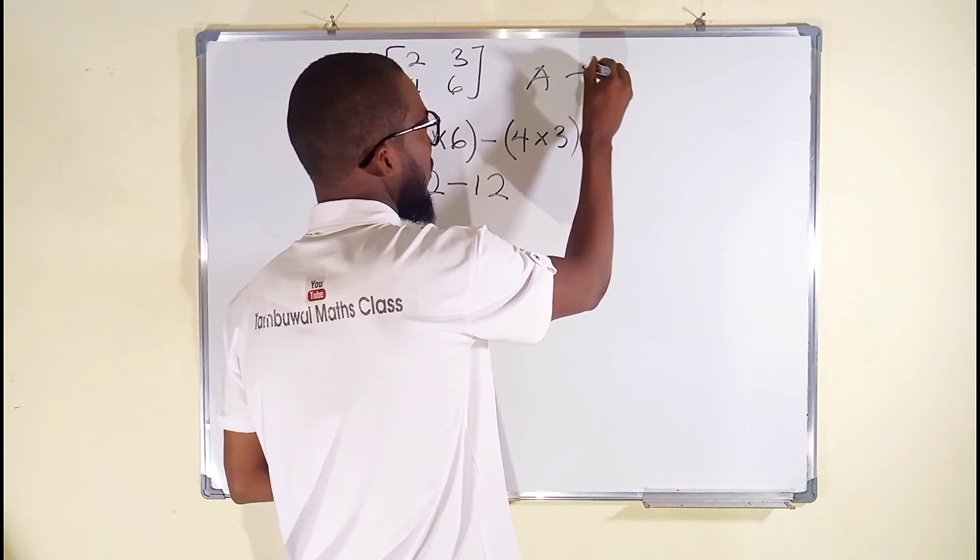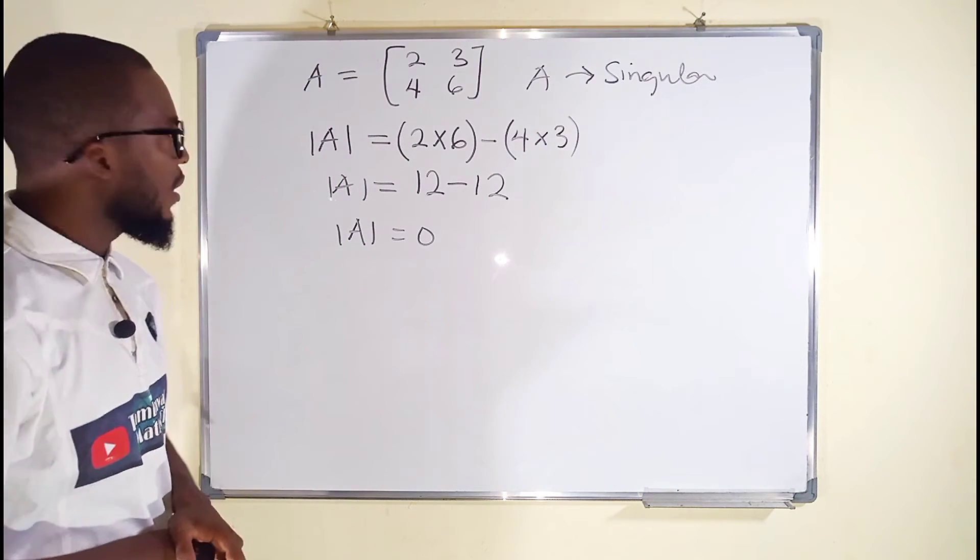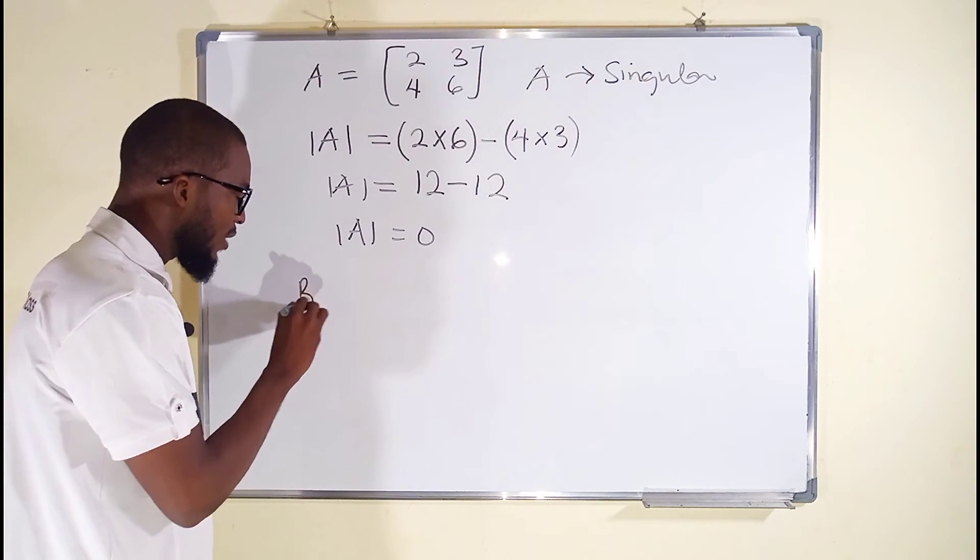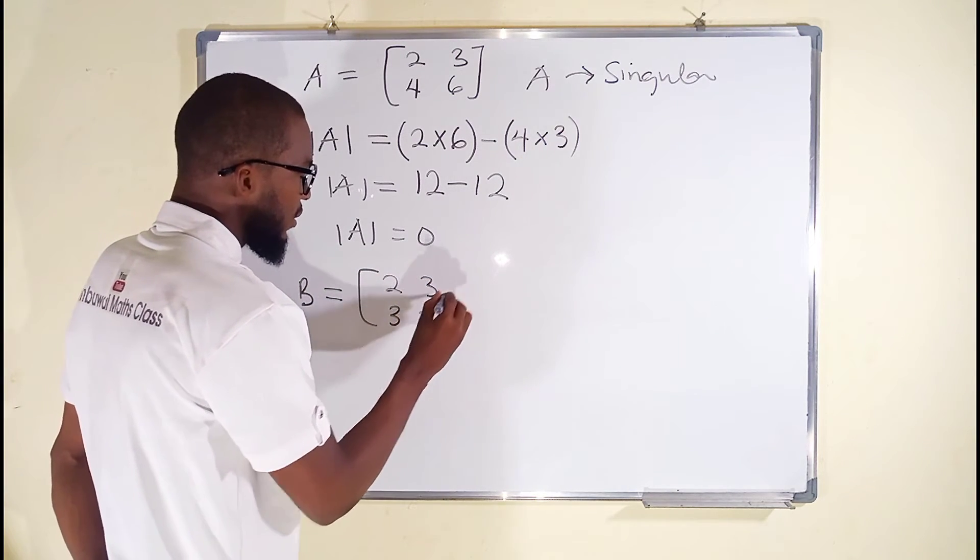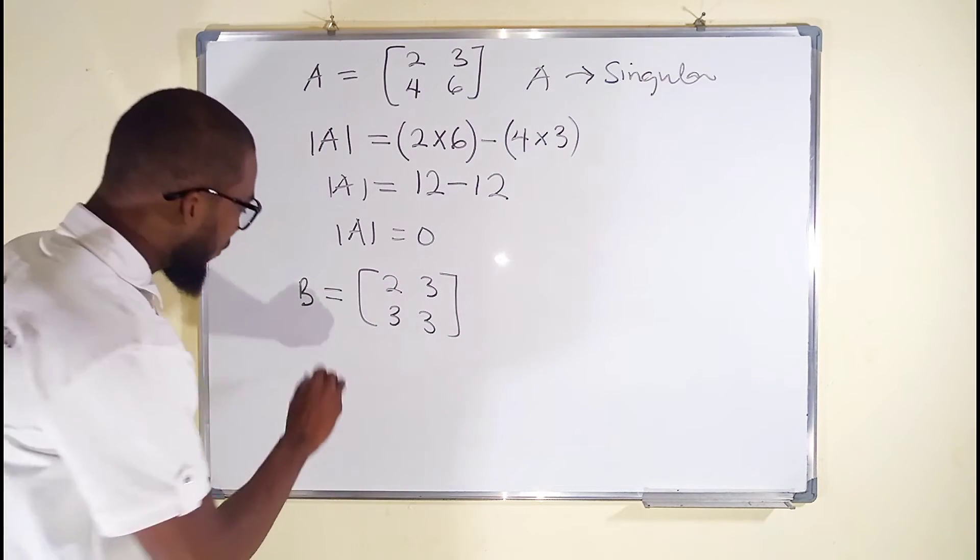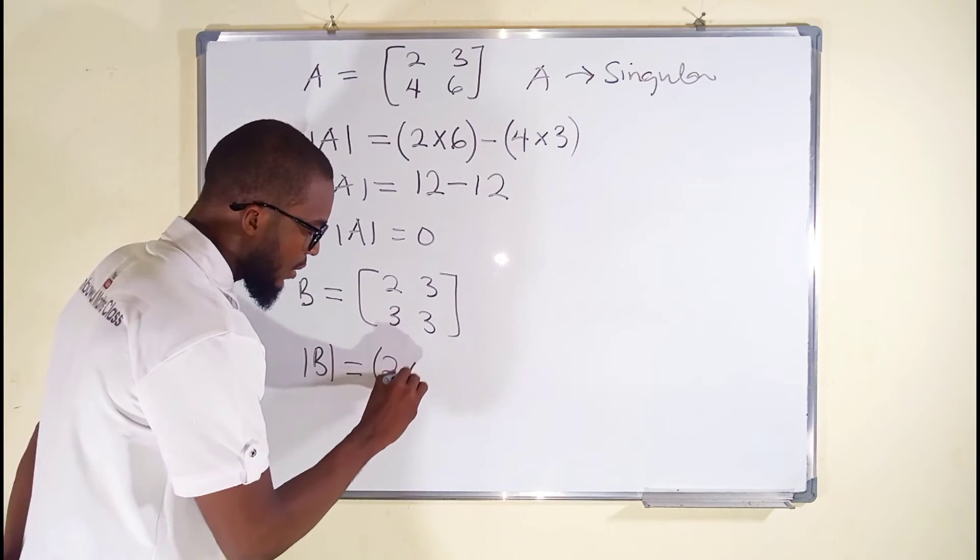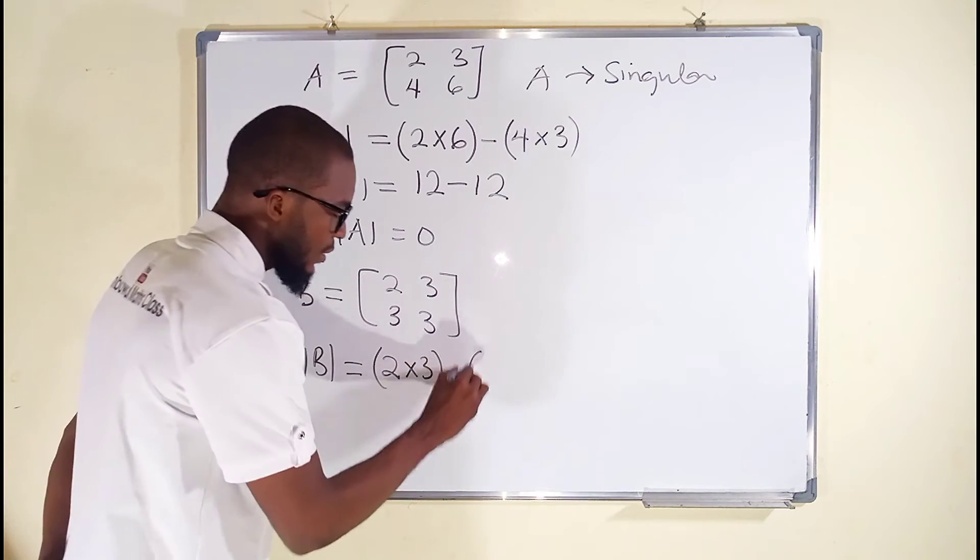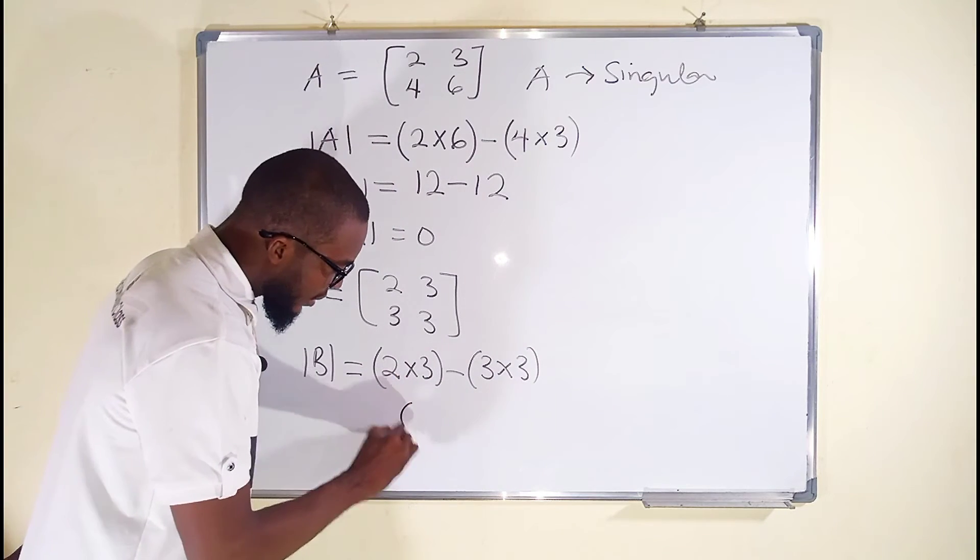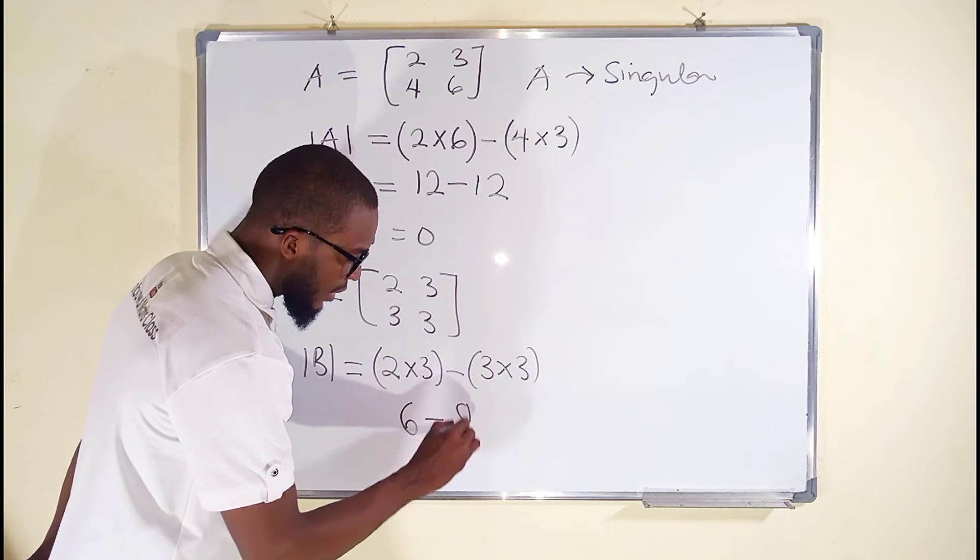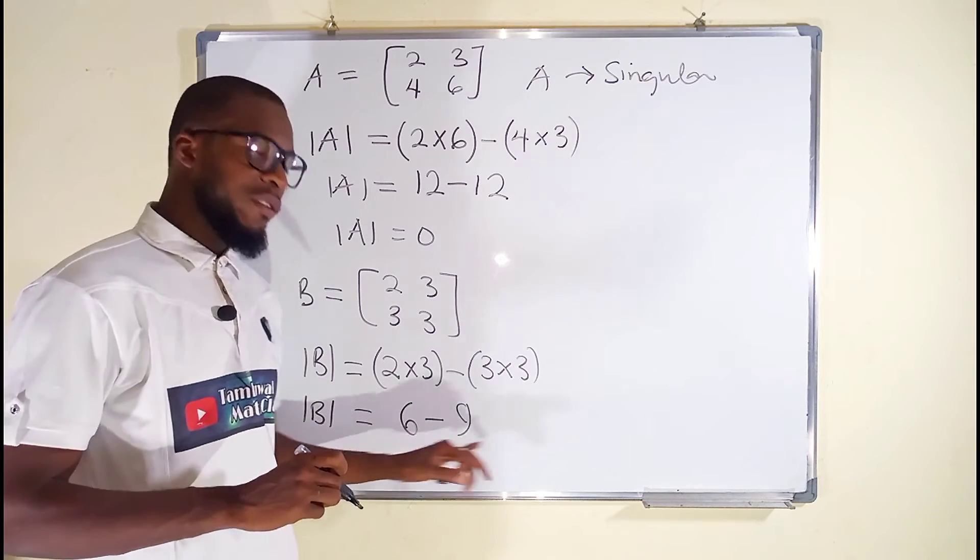Let's test another one to compare the two. Suppose we have another matrix B that has these entries: 2, 3, 3, and 3. Let's find the determinant of B: 2 times 3 minus 3 times 3. 2 times 3 is 6, minus 3 times 3 is 9, and 6 minus 9 is negative 3.